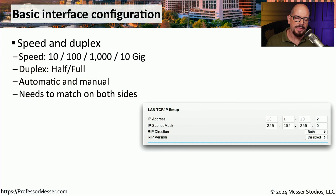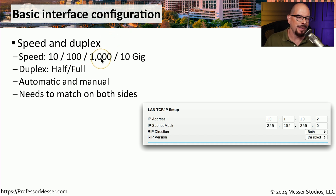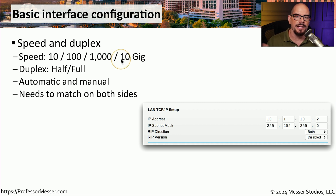We can start with the basic connectivity that we have to the network. When we plug in an ethernet cable, there are a number of ethernet settings we need to consider, and two of the most important are the ethernet speed and the duplex. The speed is obviously going to be how fast this connection is going to run — this might be a 10 megabit connection, 100 megabits, 1,000 megabits, which would also be a 1 gig connection, 10 gig, or even faster.